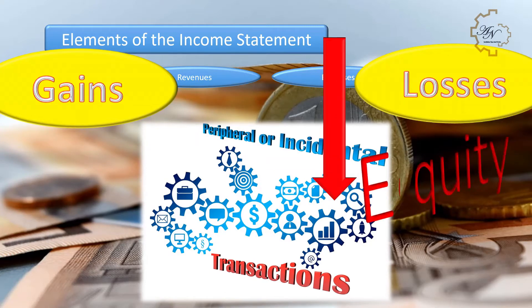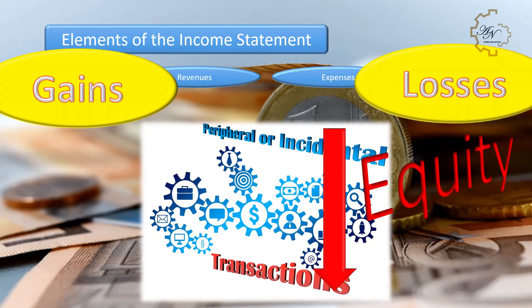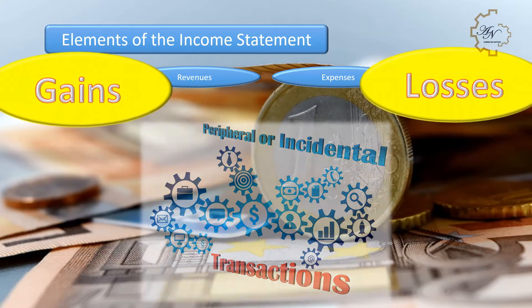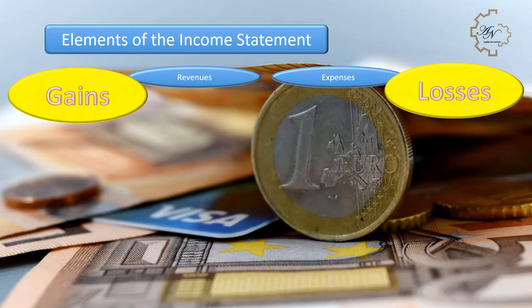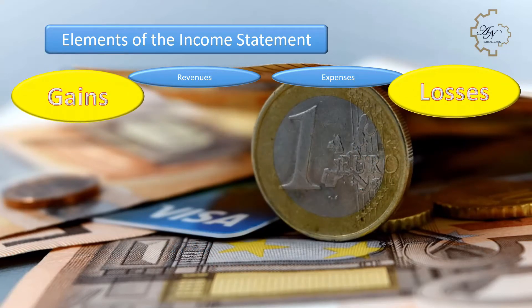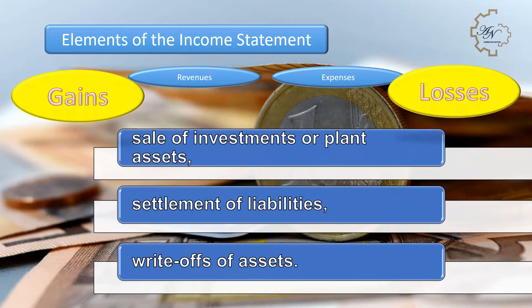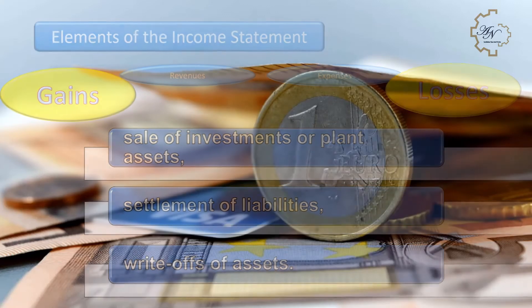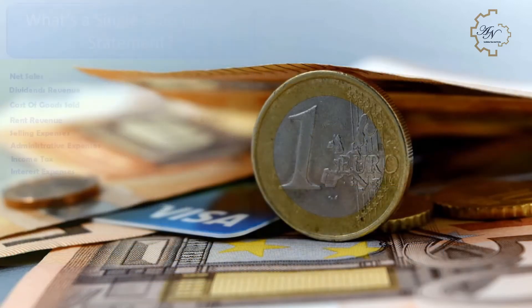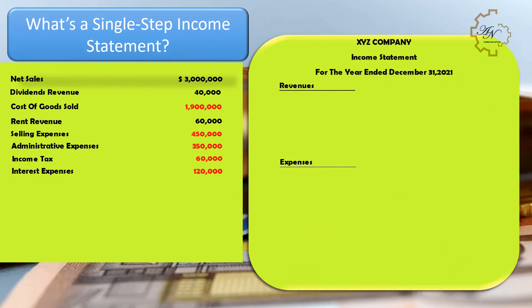Gains are increases in equity or net assets from peripheral or incidental transactions. Losses are decreases in equity or net assets from peripheral or incidental transactions. Gains and losses can result from the sale of investments or plant assets, settlement of liabilities, and write-offs of assets.